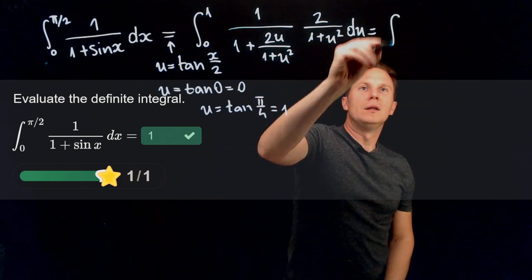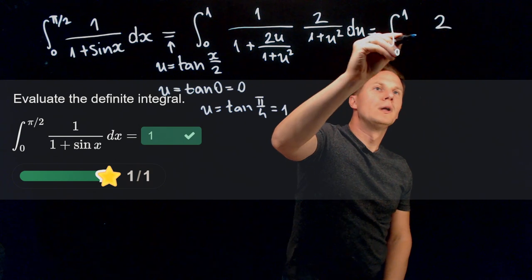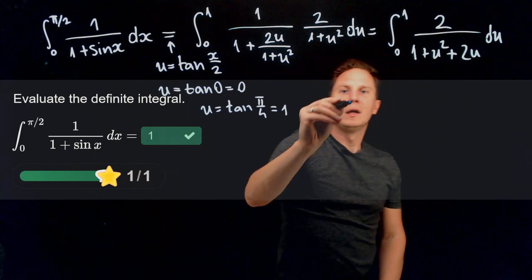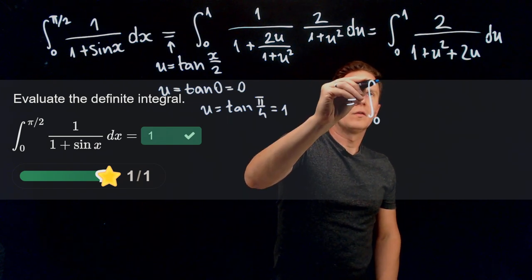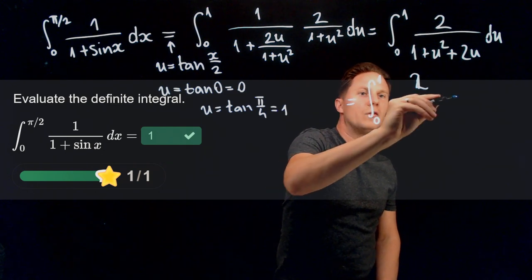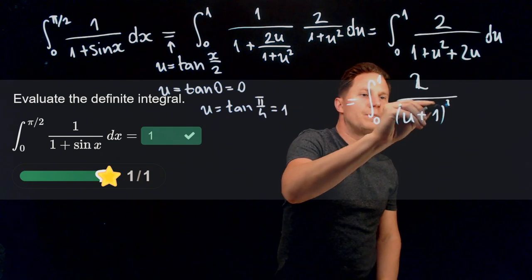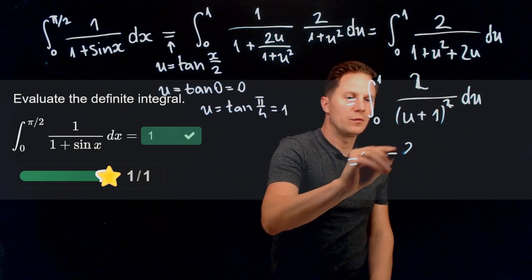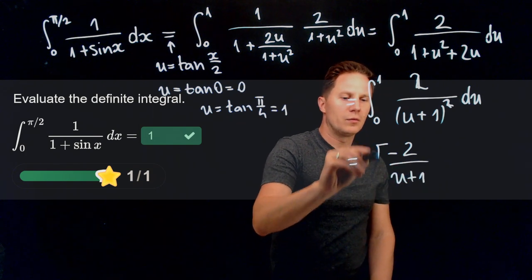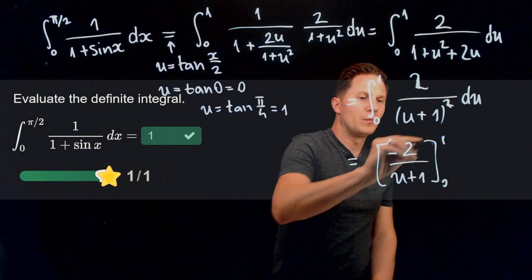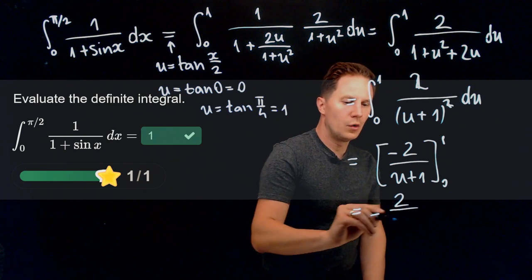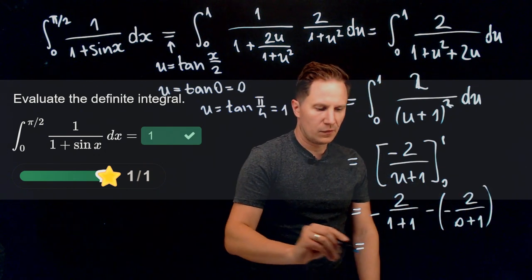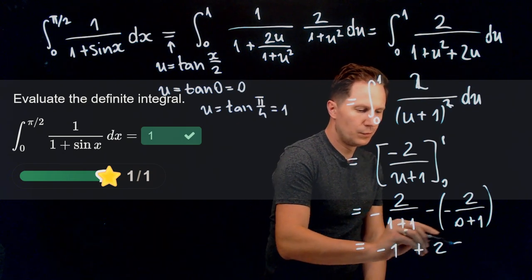Multiplying the denominators gives the integral from 0 to 1 of 2/(1 + u² + 2u)du. The denominator is a square: (u + 1)². We can write the antiderivative as -2/(u + 1). Evaluating from 0 to 1 gives -2/(1 + 1) - (-2/(0 + 1)), which is -1 + 2 = 1.